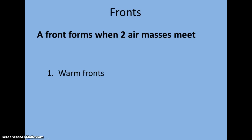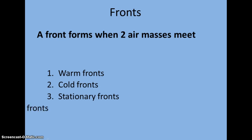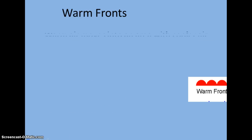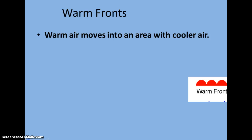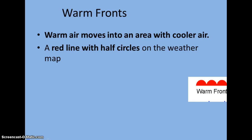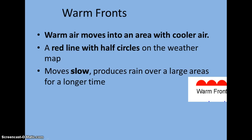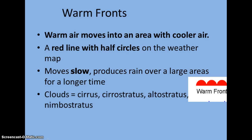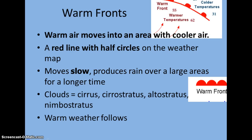As these air masses move we then start to see fronts. Fronts are when two air masses meet. There are four different types: warm fronts, cold fronts, stationary fronts, and occluded fronts. A warm front is when warm air moves into an area of cooler air; it's symbolized on a weather map by a red line with red half-circles on one side. Warm fronts move slowly, producing rain over large areas for a long period of time. The types of clouds associated with a warm front are cirrus, cirrostratus, altostratus, and nimbostratus — nimbostratus is when you start to see more rain. Following a warm front, warm weather comes after it moves through the area.